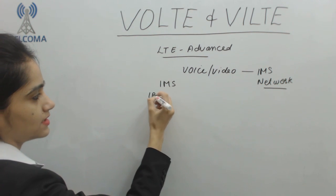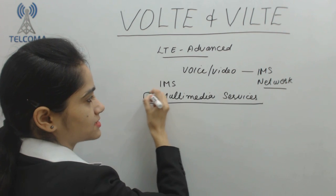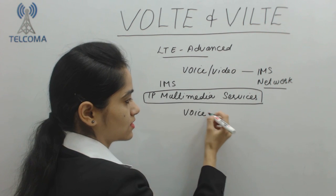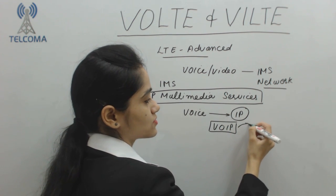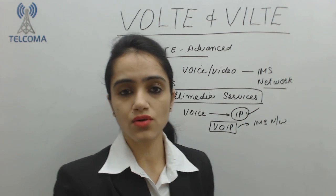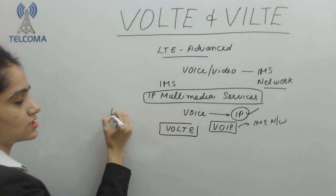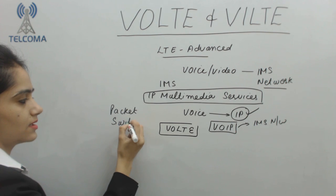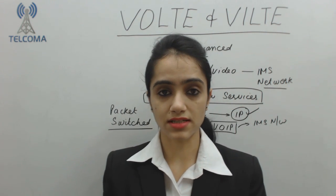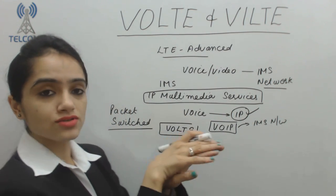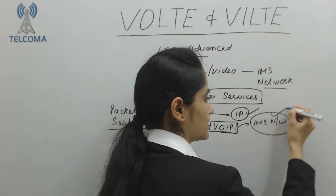IMS stands for IP Multimedia Services. In this, we are transmitting voice by converting it with an IP address — that means this is Voice over Internet Protocol. We have voice over the IMS network, which provides IP connectivity. As LTE is a totally packet-switched network, we can't send voice over a circuit-switched network. So we will encode voice onto an IP address and then transmit it using the IMS network for IP conversion.